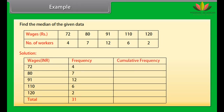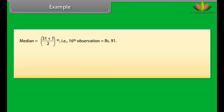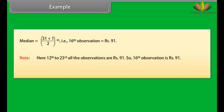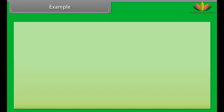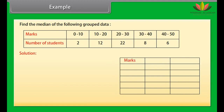Find the median of the given data. Solution: In the first column the wages are written, in the second column the given frequencies are written. The sum of the frequencies is 31. In the third column the cumulative frequency is found by adding the previous frequency to the current one. The median position is the (31+1)/2 equals 16th observation, which equals Rs. 91. Here, the 12th to 23rd observations are all Rs. 91, so the 16th observation is Rs. 91.